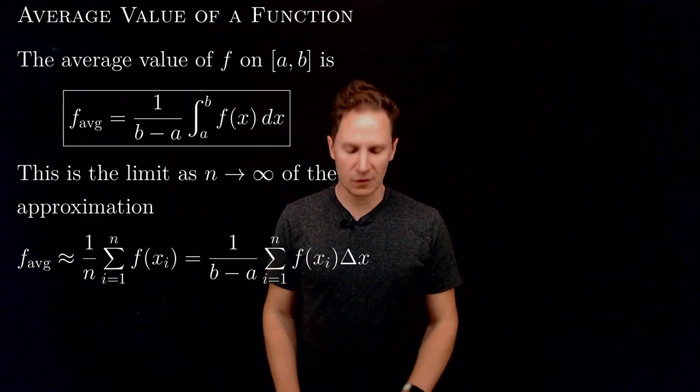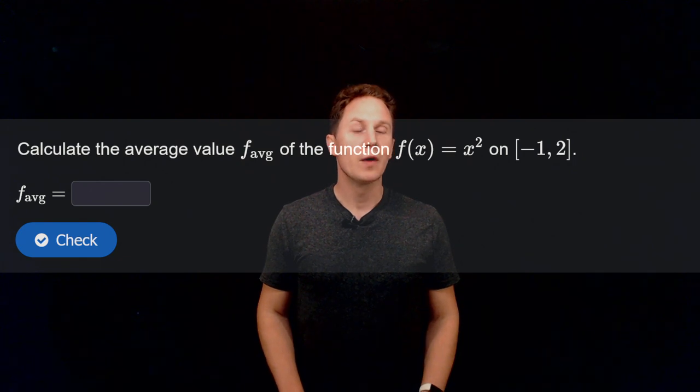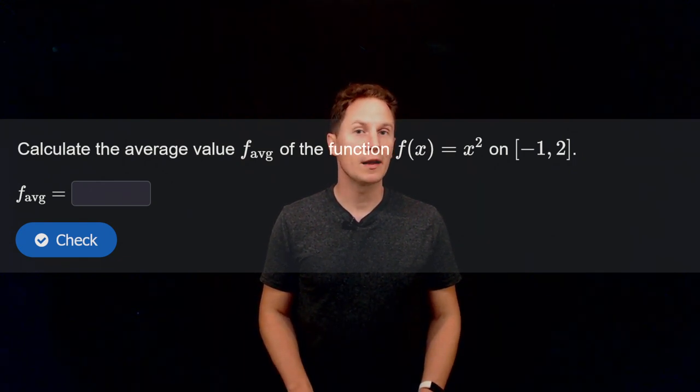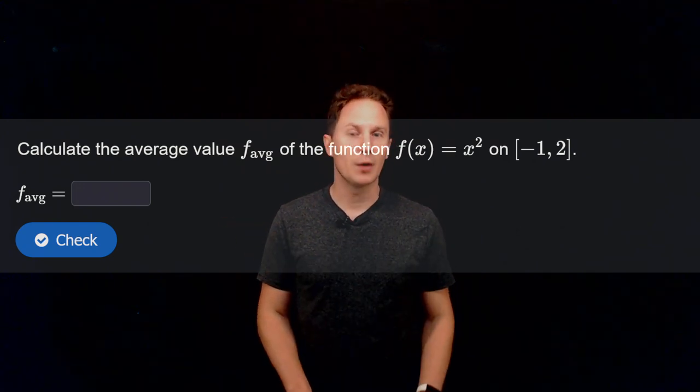Okay, let's compute some averages. Calculate the average value of the function f(x) equals x squared on the closed interval between negative 1 and 2. Pause the video and input your answer in the box.